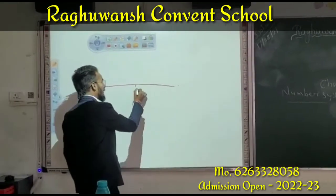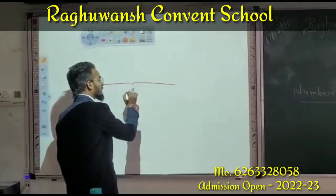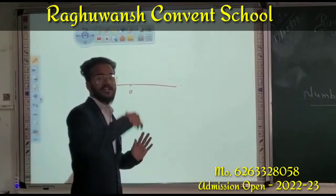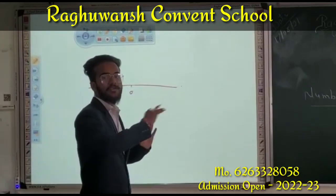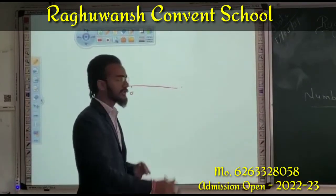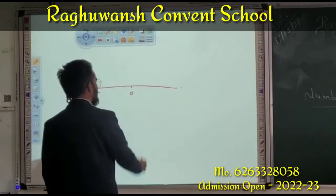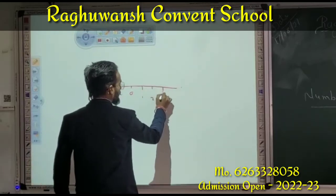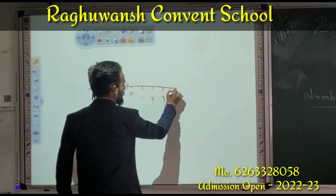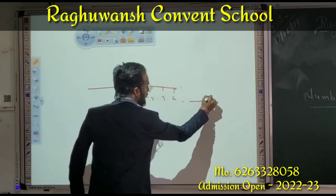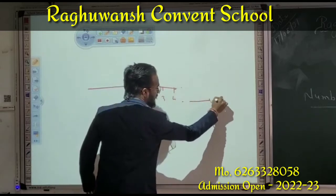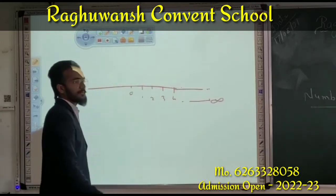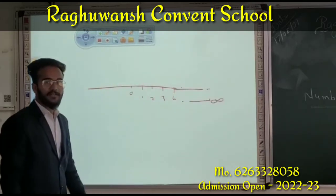So the whole number starts from 0. The total numbers are almost 0, so every number — 1, 2, 3, 4, and infinite — these numbers are whole numbers.